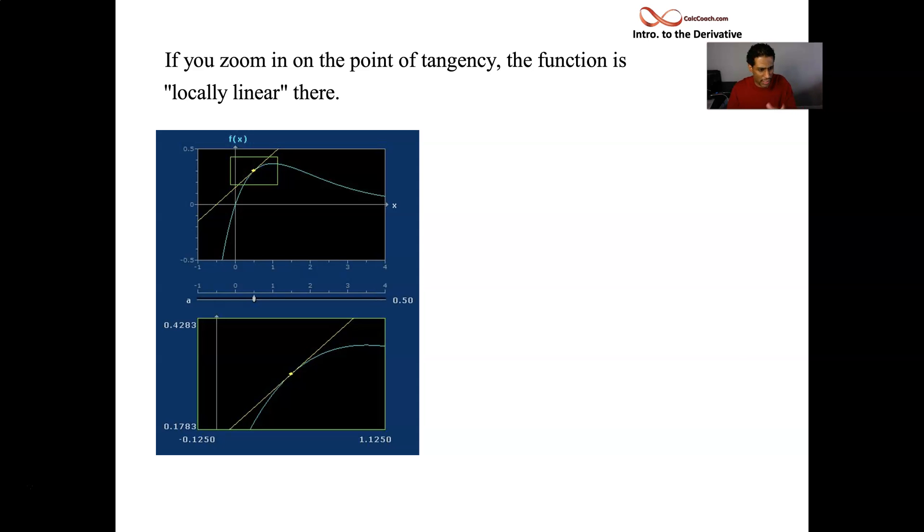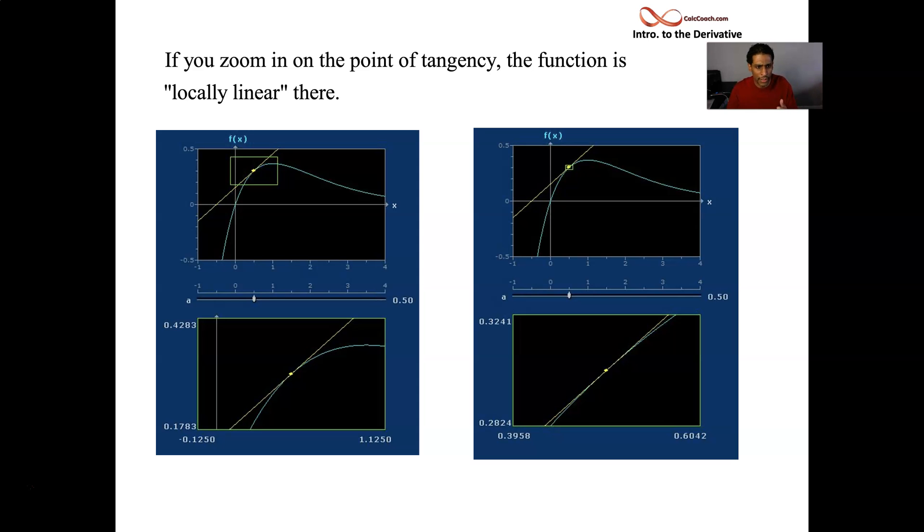So this is a one-time zoom and a two-time zoom going across here, and then it's basically a four-time zoom. As you zoom in, in a small window here, this is the same function and the same tangent line. The point behind it is that locally, nearby the point of tangency, the yellow dot is a point of tangency, nearby there.